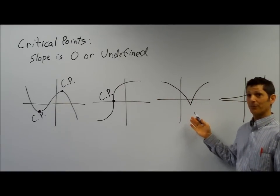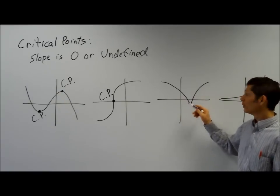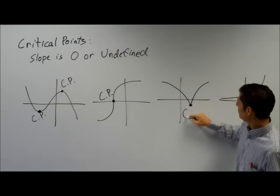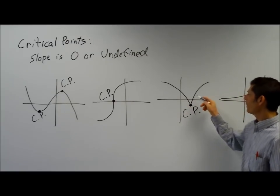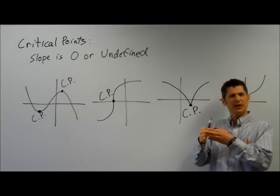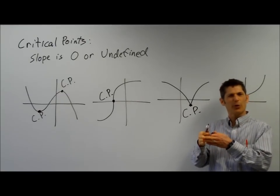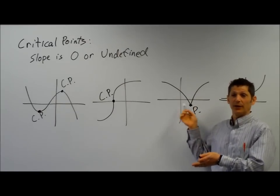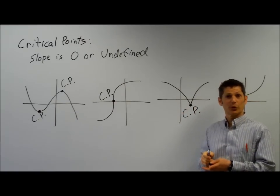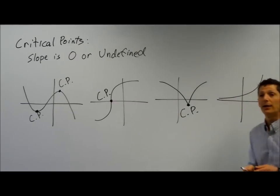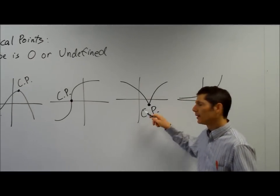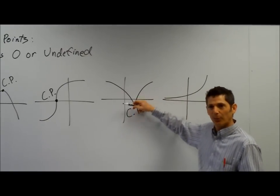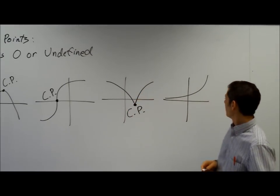How about here? Just one. Also a place where the slope is undefined. Functions can't come to a sharp corner — well, the function does, but the derivative is undefined here because there's a sharp corner. There are multiple slopes; it's impossible to measure the slope at that point. It's undefined.